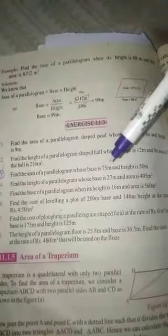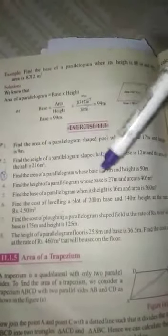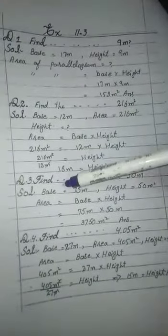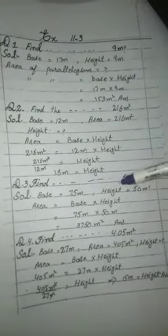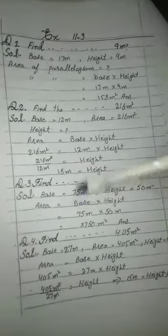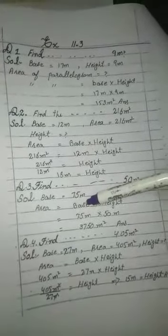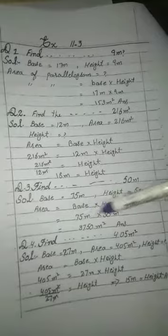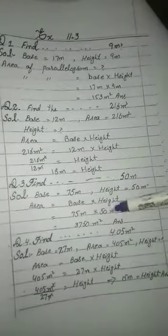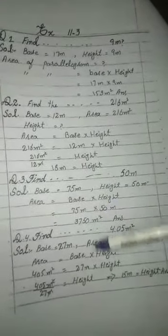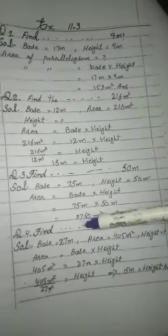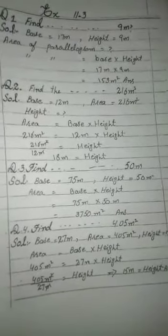Question number 3: Find the area of a parallelogram where base is 75 meters and height is 50 meters. It is very easy. Base is 75 meters, height is 50 meters. Area of parallelogram is equal to base multiplied by height. Putting values: 75 meters multiplied by 50 meters. The answer is 3750 meters square.